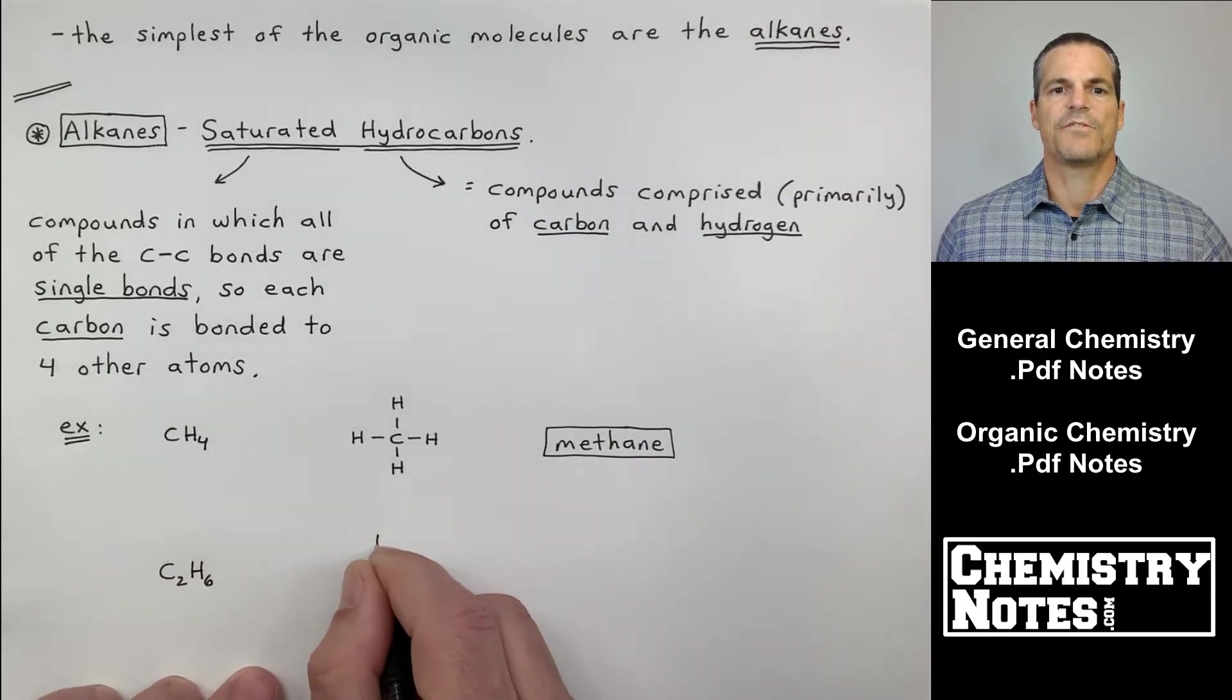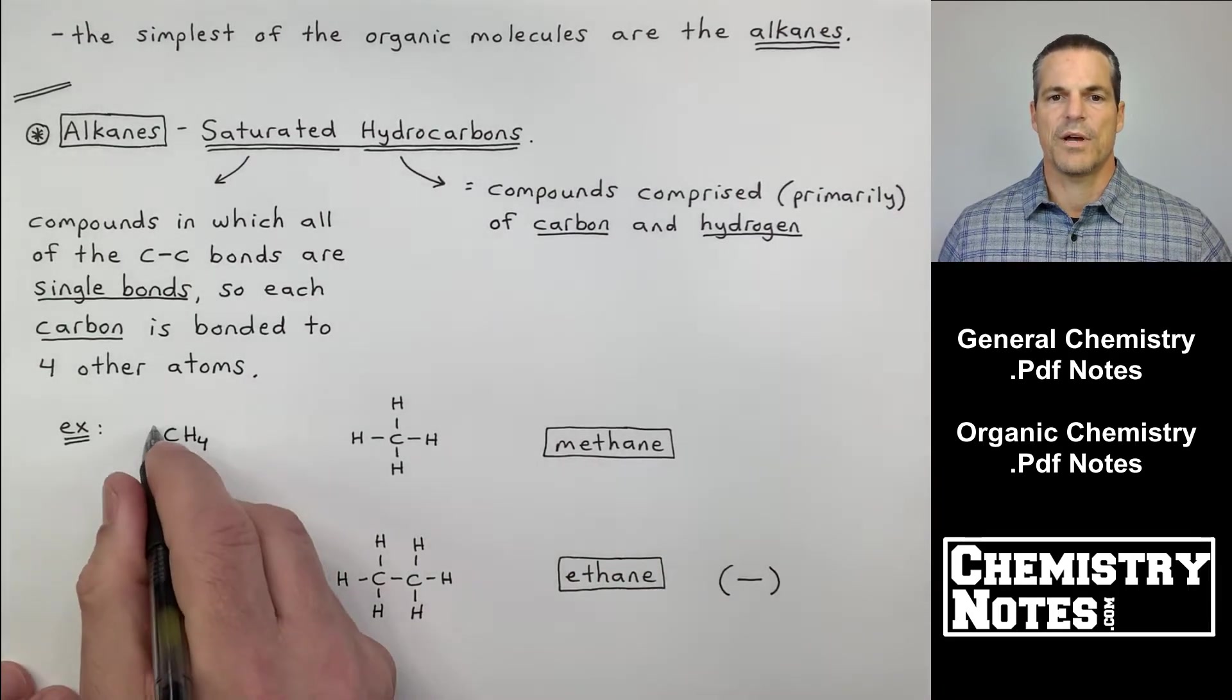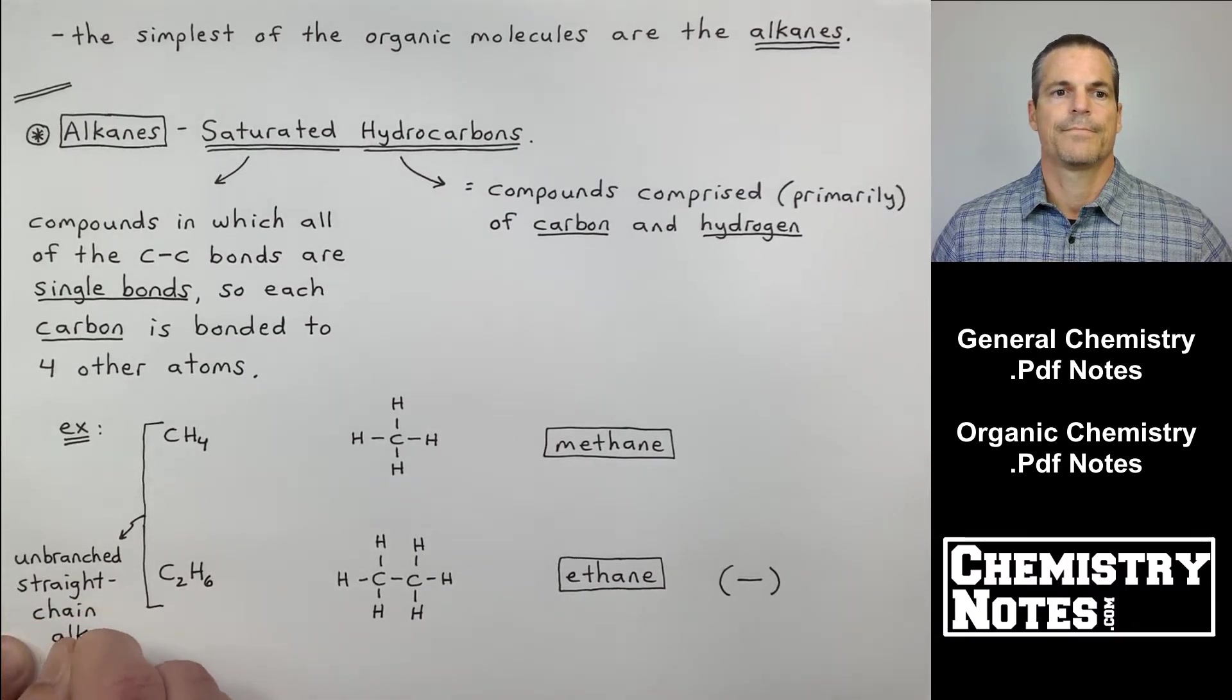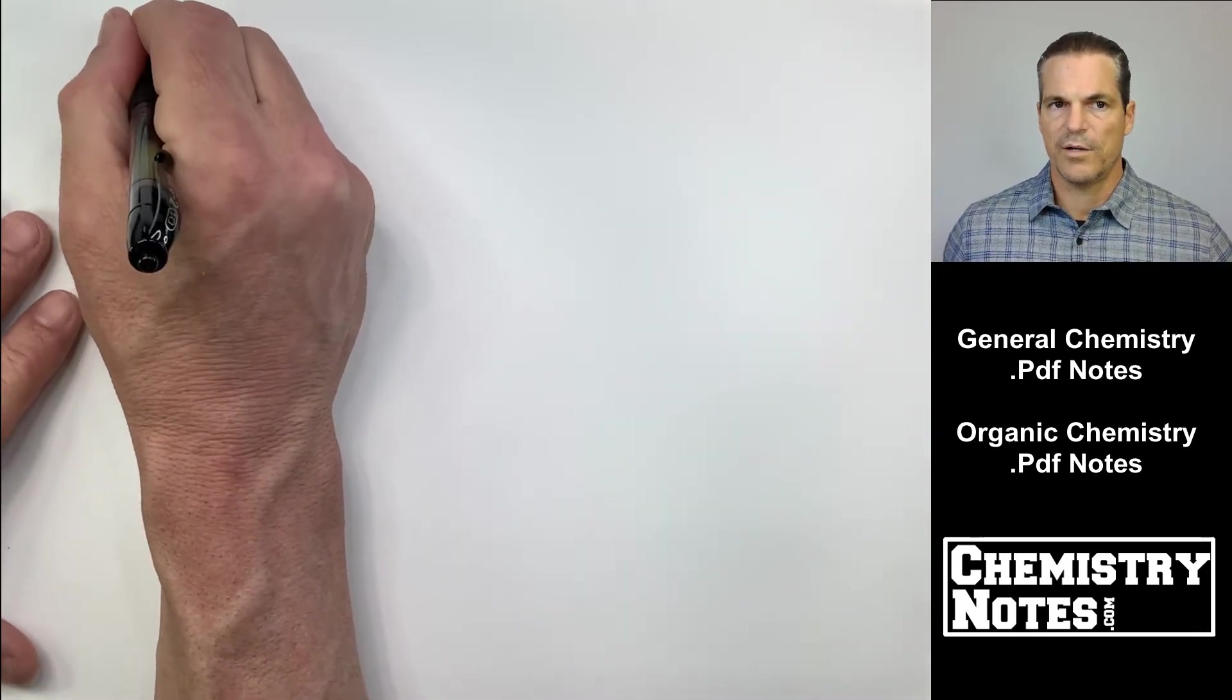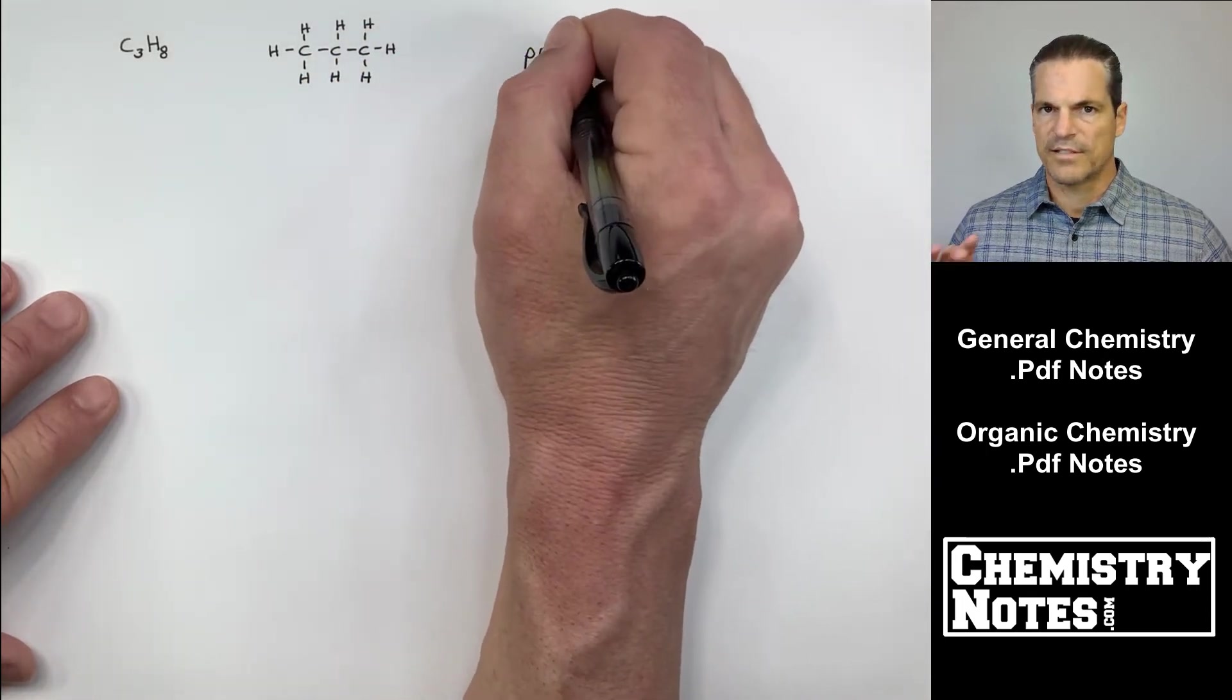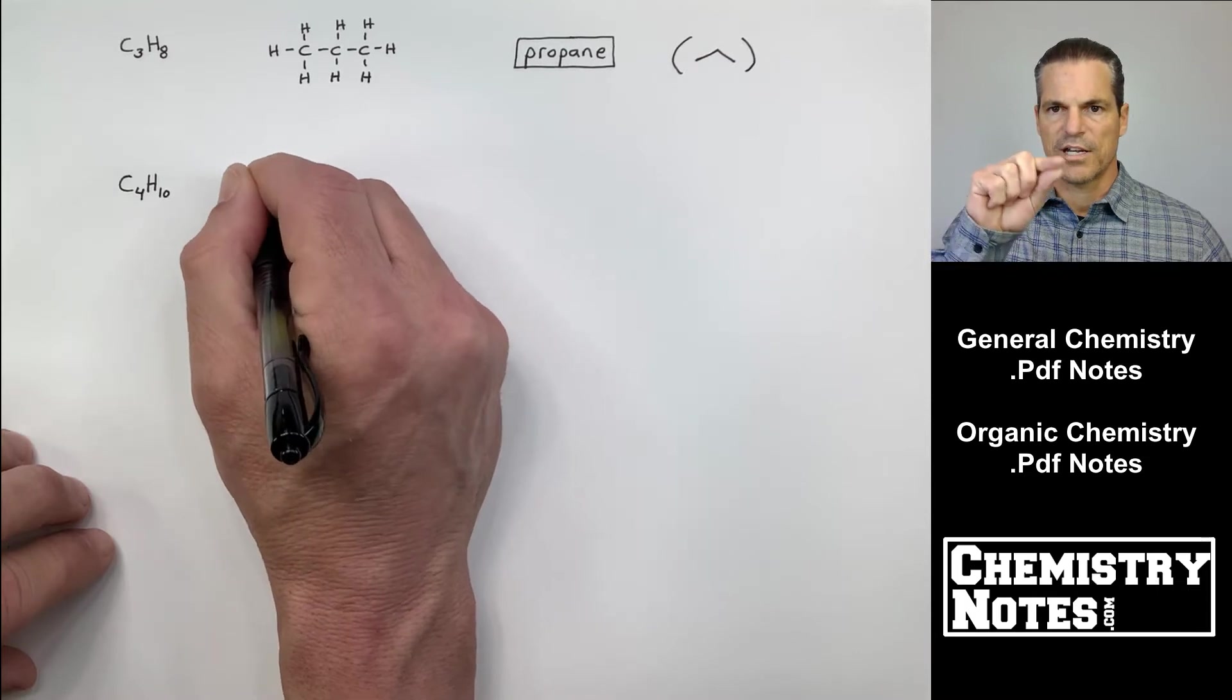So compounds in which all of the CC bonds are single bonds, so each carbon is bonded to four other atoms. So example, CH4, methane. C2H6, ethane. And you'll notice that each of the carbons is bonded to four other substituents. Now ethane, you can write as a simple dash. And the end point or the junction at the end there is a CH3. So these are examples of unbranched alkanes. We'll do some more. So the next one that would follow would be to have three carbons. C3H8, if I line up my three carbons like that and then put H's all around it to satisfy the octet for carbon, this is propane.